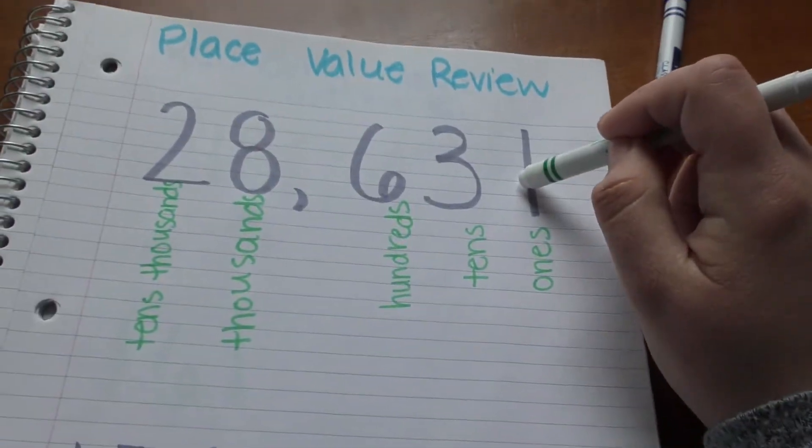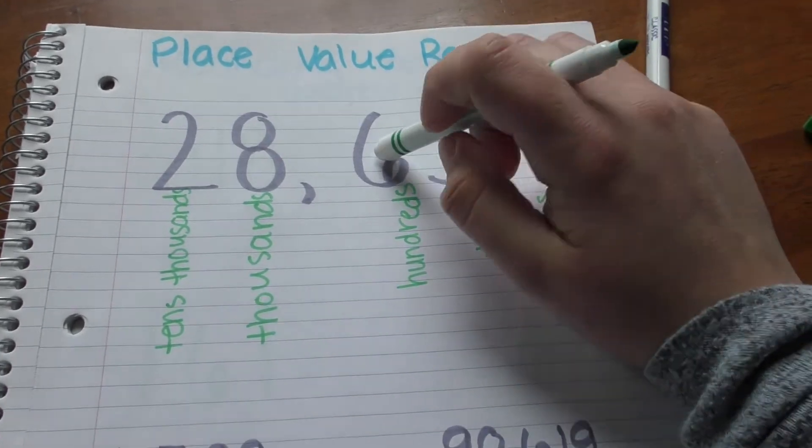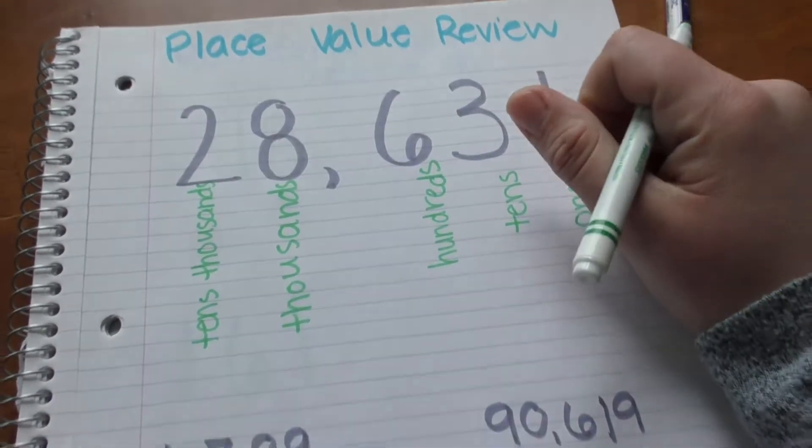So we have our ones, tens, hundreds, thousands, ten thousands.